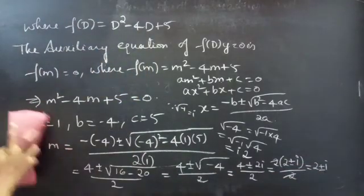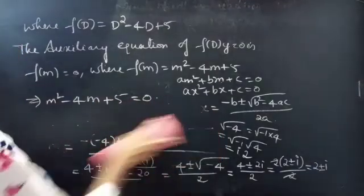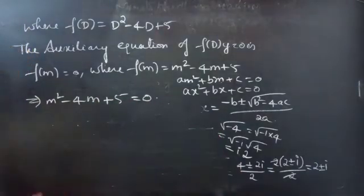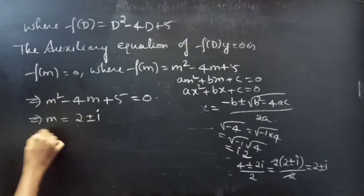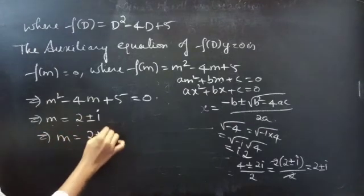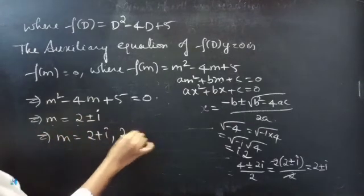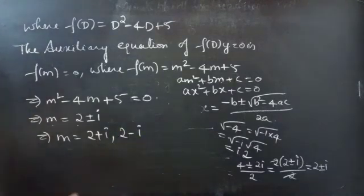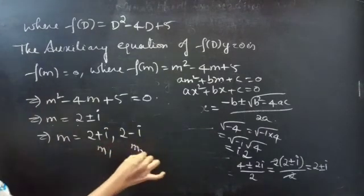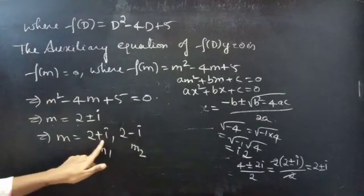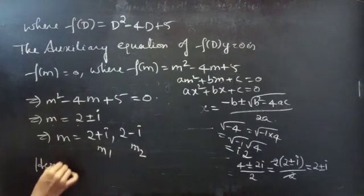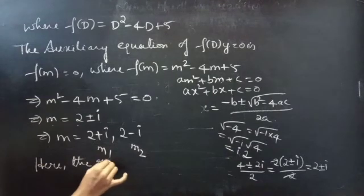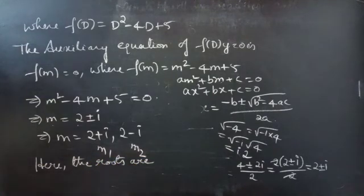So here the roots are conjugate complex. Then m equals to 2 plus or minus i, which means m₁ equals to 2 plus i and m₂ equals to 2 minus i. Here we are having complex numbers, and the roots are conjugate complex.